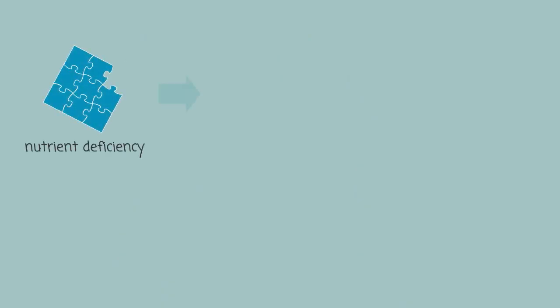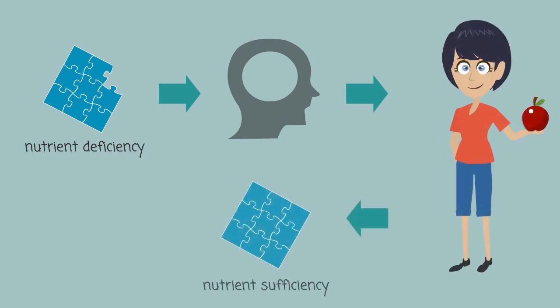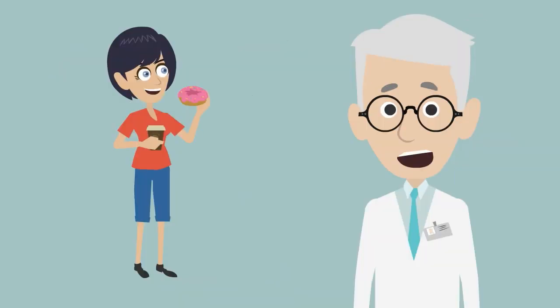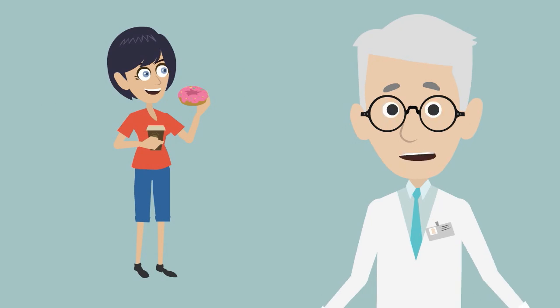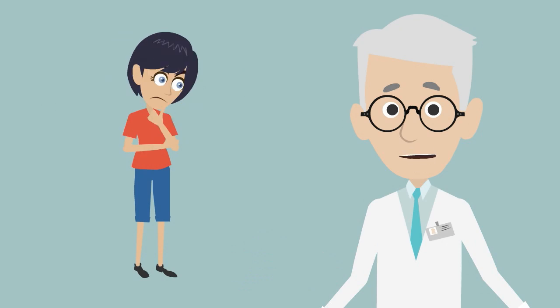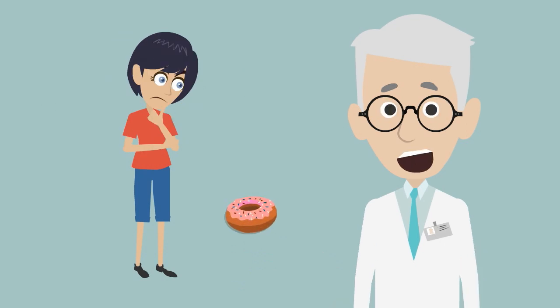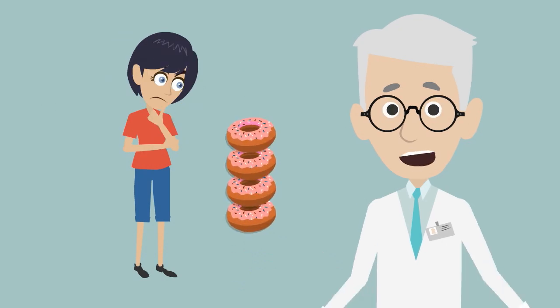You see, when your diet is deficient in a key nutrient, your brain sends a signal, driving you to seek out food in order to meet your nutritional need. But a lot of people don't understand what their body is trying to tell them. They simply choose the foods they had before. With the wrong food choices, they end up overeating and still don't feel satisfied.